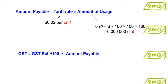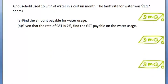To calculate the GST, we have to take the GST rate divided by 100% multiplied by the amount payable. Let's take a look at this example.